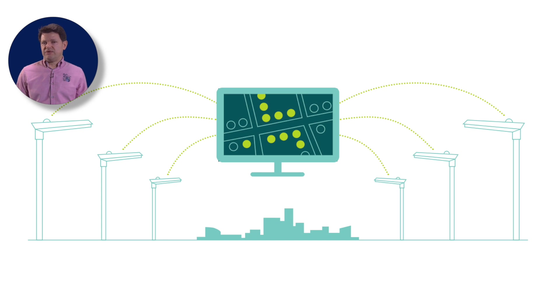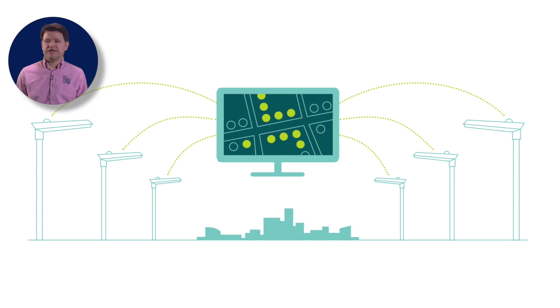So there you have it — four key building blocks which make up the main functionality of any lighting control system.